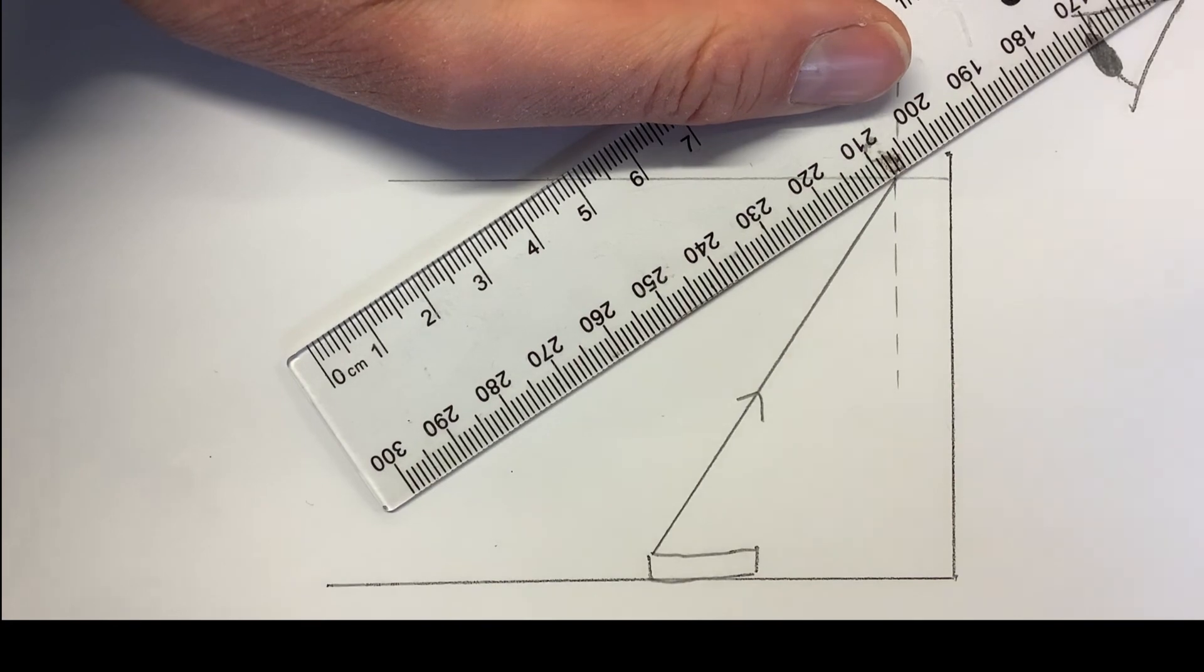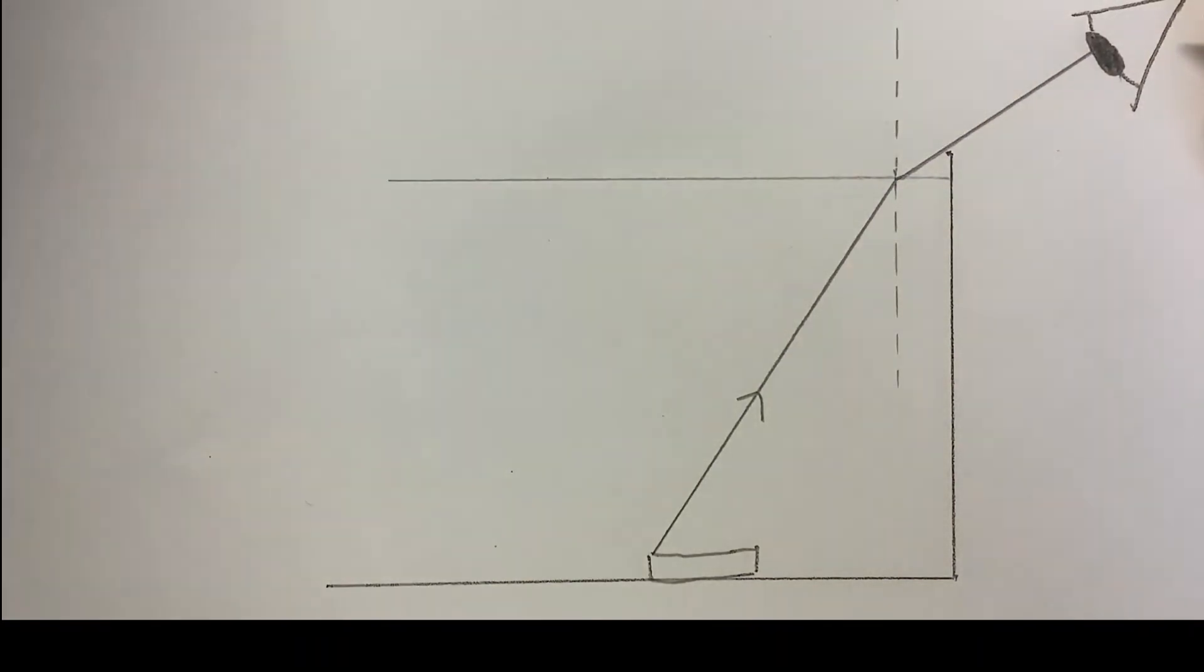Then we've got the ray going from the coin to the surface of the water, and then because it is leaving the water, it refracts away from the normal and goes into the eye, completing our ray diagram. Hopefully, you now understand why we can see the coin once we've added water to the cup.